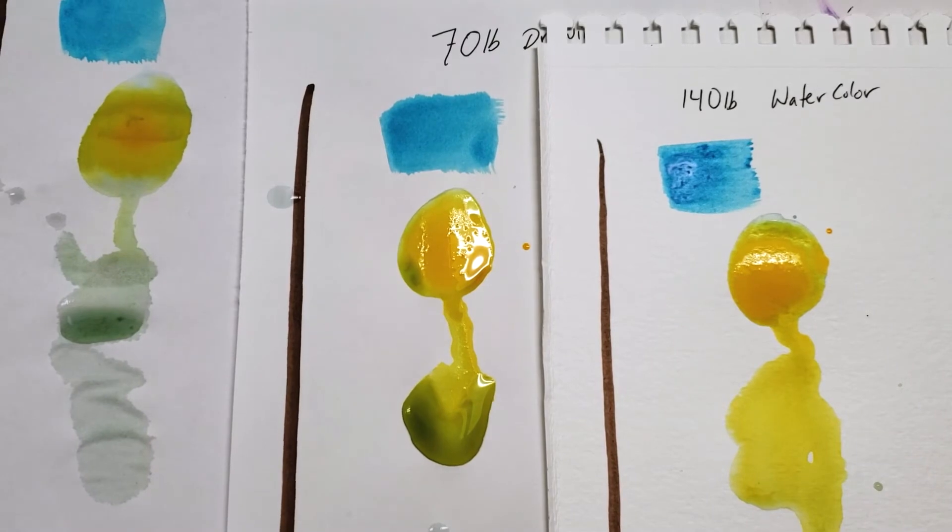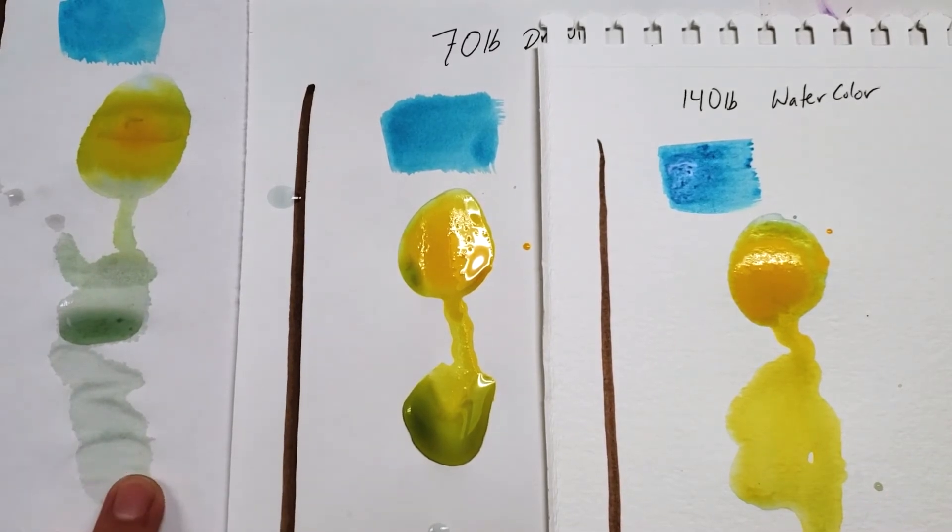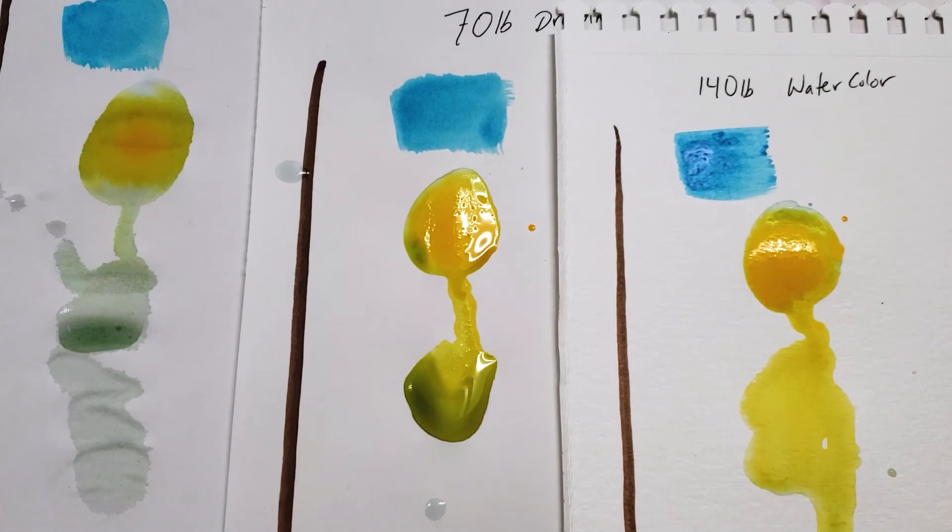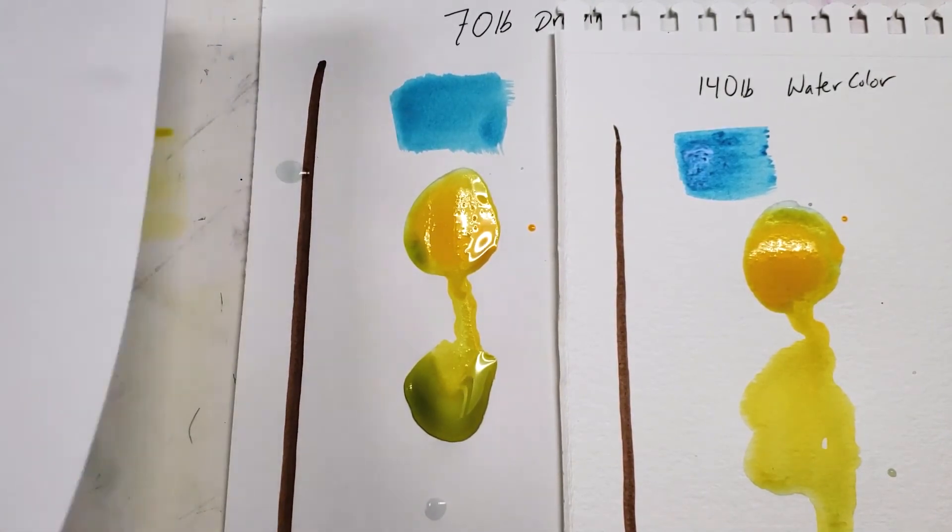And here are the papers after a few minutes of drying. You're going to see that the copy paper is not really holding up to it. It kind of wrinkles and you can see through it.